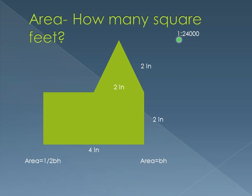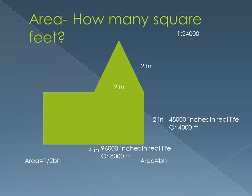Now, our scale is for every 1 inch on our map, there are 24,000 inches in real life. So for 2 inches, we're going to have 48,000 inches in real life, because 24,000 times 2 is 48,000. To find feet, we divide by 12, so 48,000 divided by 12 is 4,000 feet. Since 4 is double 2, we can double 48,000 and 4,000 to get our numbers, or just do 24,000 times 4. So 2 inches equals 4,000 feet.